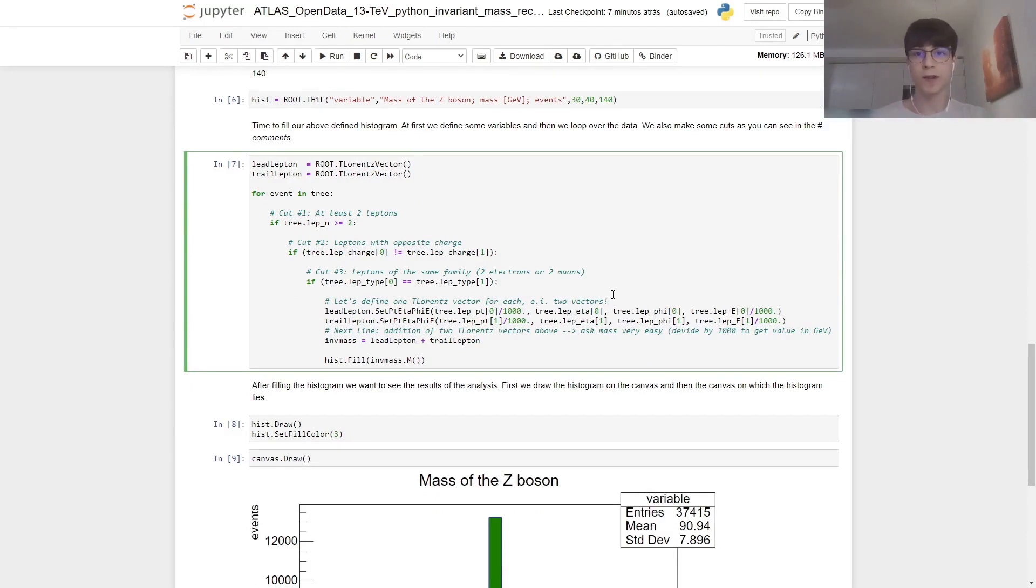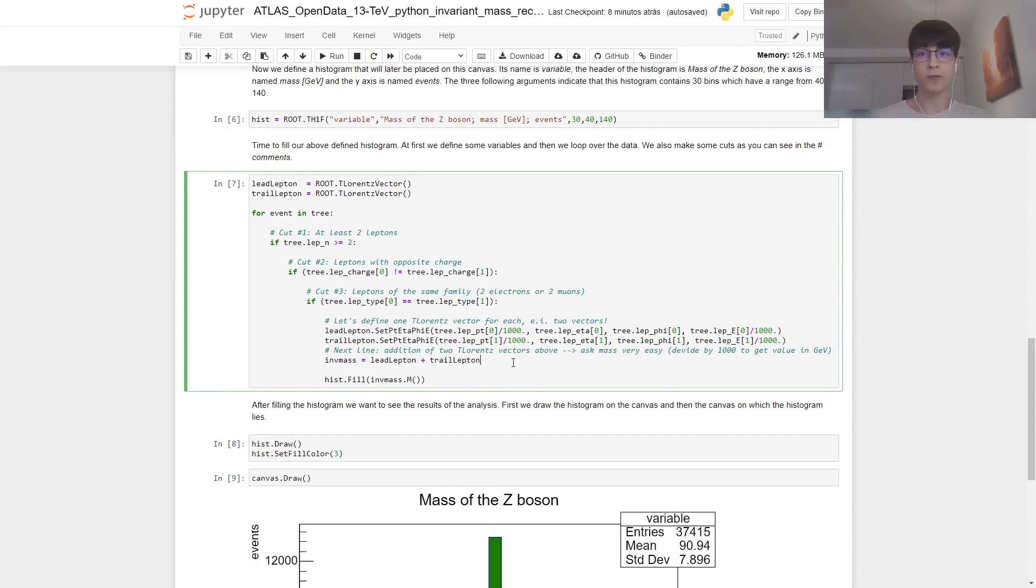Now we're going to use the properties of the TLorentzVector, specifically the method SetPtEtaPhiE. So we declare the transverse momentum, the two angles key for the orientation, and the energy of each of our leptons. So we do that for the leading lepton and for the trailing lepton. And now we move on to the calculation required to find the mass of the Z boson, which is to calculate its invariant mass as the sum of the leading lepton and the trailing lepton. And then finally, we populate the histogram with the calculated invariant mass of that specific event.